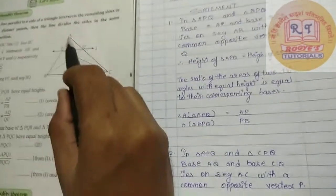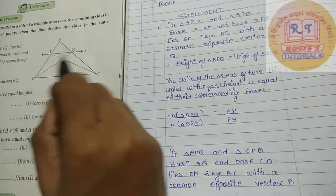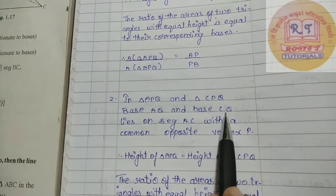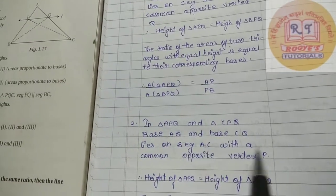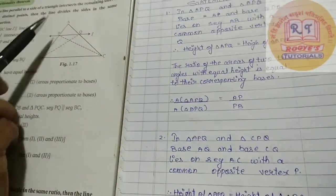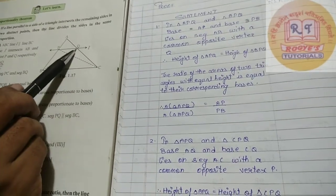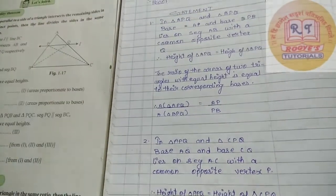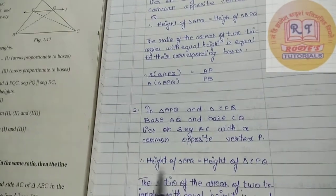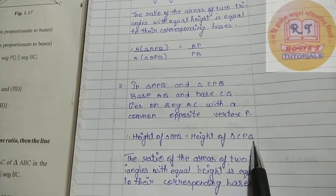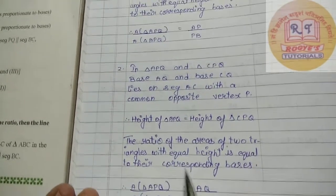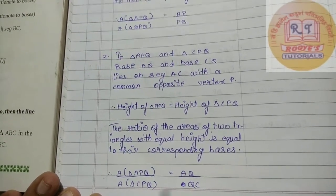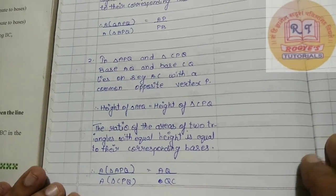Similarly, consider triangle APQ and triangle CPQ. In triangle APQ and CPQ, the base of APQ is AQ and the base of CPQ is QC, both lying on segment AC — see the diagram. With a common opposite vertex P, in this situation the heights are equal. So height of triangle APQ equals height of triangle CPQ. Therefore, area of triangle APQ upon area of triangle CPQ is equal to AQ upon QC.